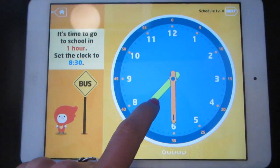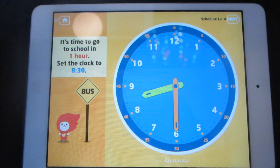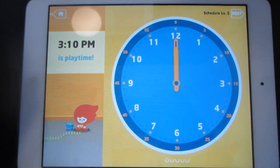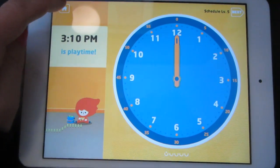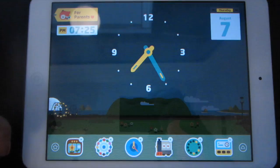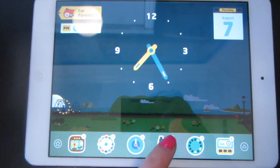Set the clock to 8:30. You can also try level 5. To go back to the main menu, tap this home button, and then try the train game.